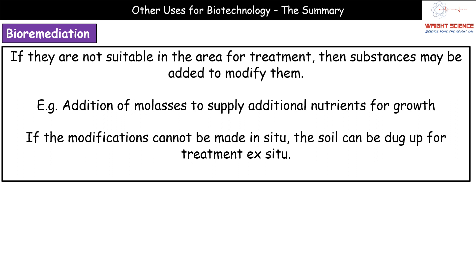If conditions in the area aren't suitable, we can add substances to modify them — for example, adding molasses to supply nutrients that may be lacking for organism growth. If we can't release those microorganisms in situ where the pollution exists, we can potentially extract the soil, take it to a treatment plant where we can control conditions, carry out the bioremediation process, and then return the treated soil to the area.